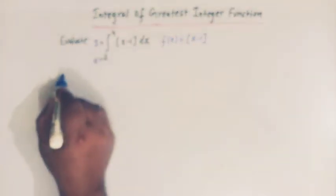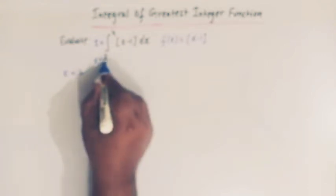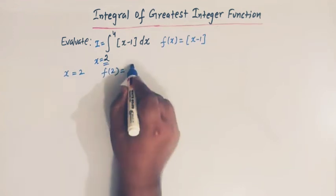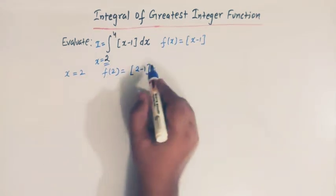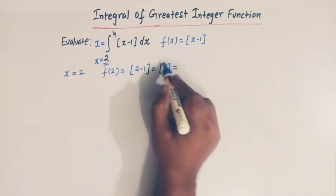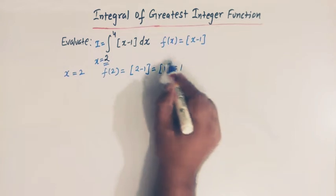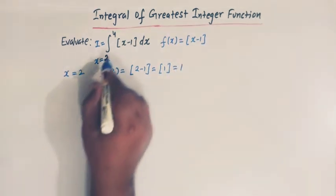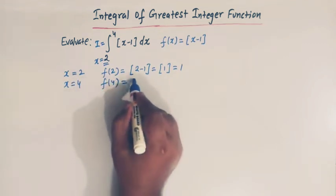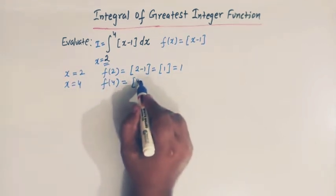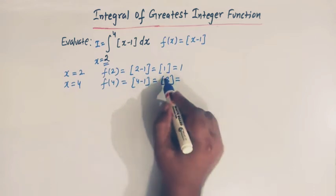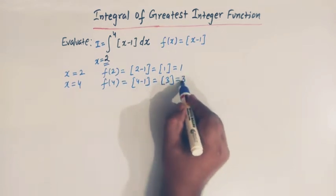When x is 2, f(2) = ⌊2 − 1⌋ = ⌊1⌋ = 1, due to the definition of the greatest integer function. And when x is 4, f(4) = ⌊4 − 1⌋ = ⌊3⌋ = 3.